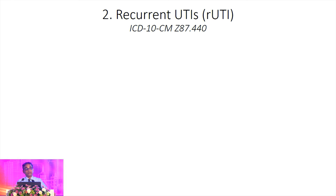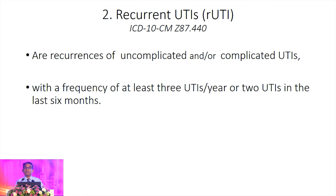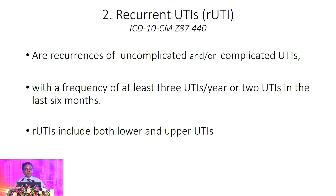My second selected difficult-to-treat urological infection is recurrent urinary tract infections. When defining recurrence, we need to have at least three urinary tract infections per year, or two urinary tract infections within the last six months — when that criterion is met, you can call it recurrent urinary tract infection.